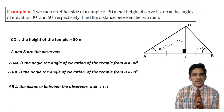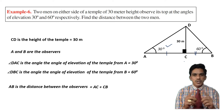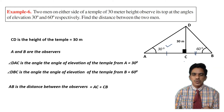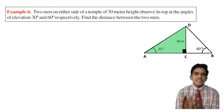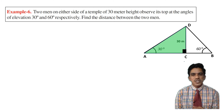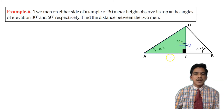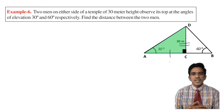In the previous exercise we dealt with problems which have only one right triangle, but here we have two right angle triangles. Consider the first triangle ACD. We have angle 30 degrees. CD is the opposite side and AC is the adjacent side. I want to calculate AC using angle 30 degrees.